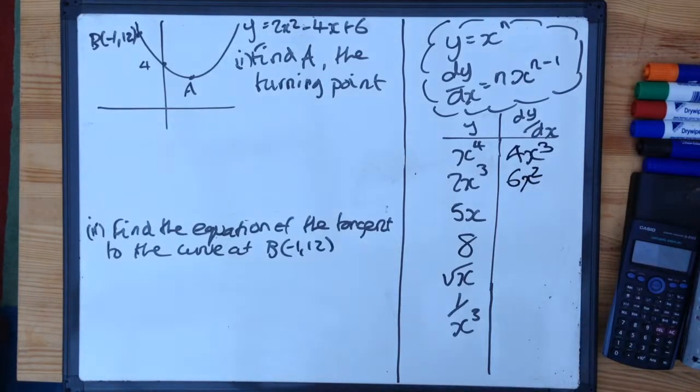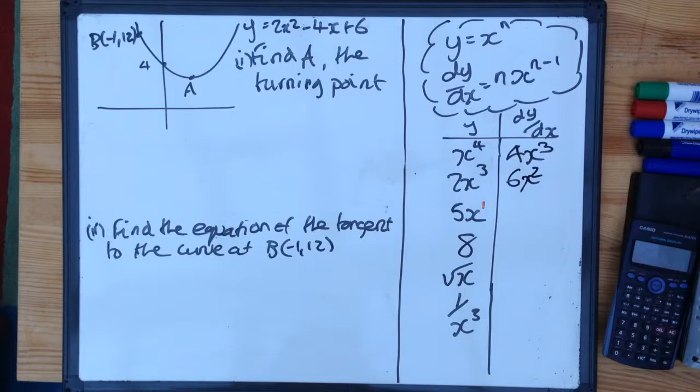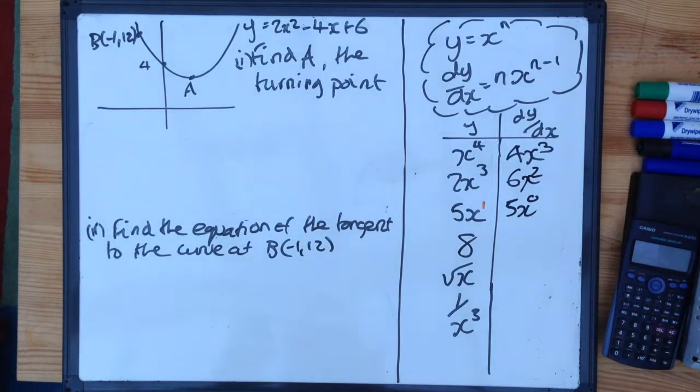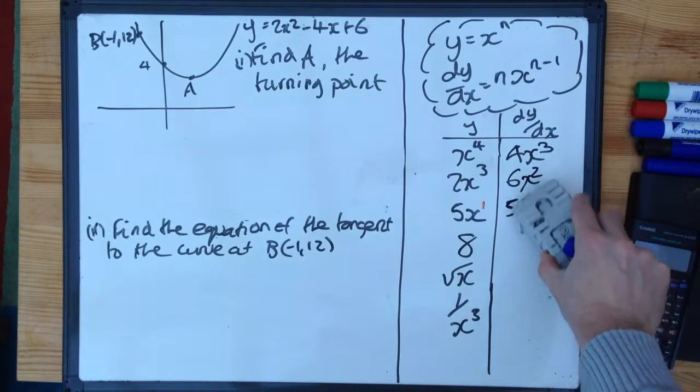With things like 5x, these are slightly more difficult because it isn't obvious what the power is. Well, you could put a 1 there, because x is x to the power of 1. So you do 1 times 5 is 5, x to the power of 1, take away 1, is 0. But x to the power of 0 is 1, anything to the power of 0 is 1, and 5 times 1 is 5.